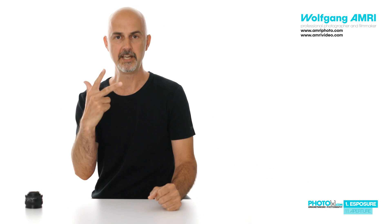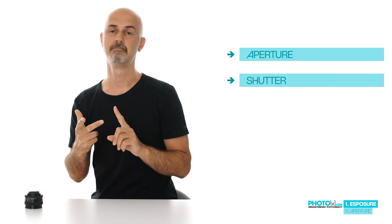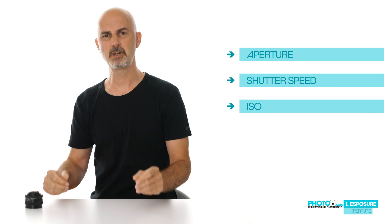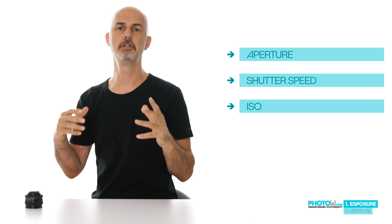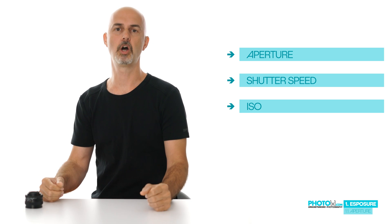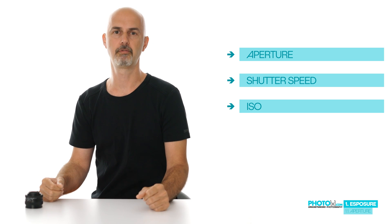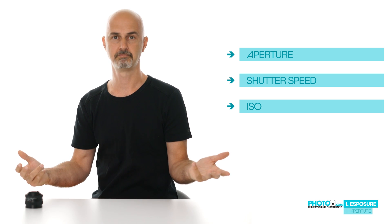Exposure is made up of three components: aperture, shutter speed, and ISO. Sounds pretty complicated, but these are nothing more than overly complex technical terms for totally logical things.